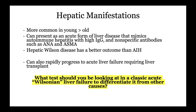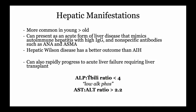It's important to remember the classic findings in acute Wilsonian liver failure on LFTs. The main thing is the ALT to total bilirubin ratio: an ALT to T-bili ratio of less than 4 — or a low ALT — is one of the hallmarks. The other thing is a high AST to ALT ratio. Both of these findings in the setting of acute liver failure are almost 100% diagnostic for Wilson's disease.